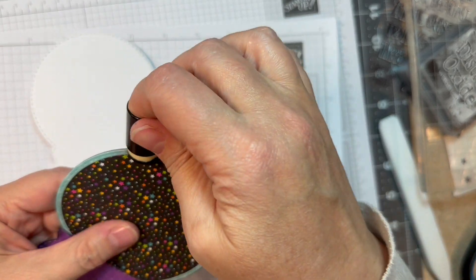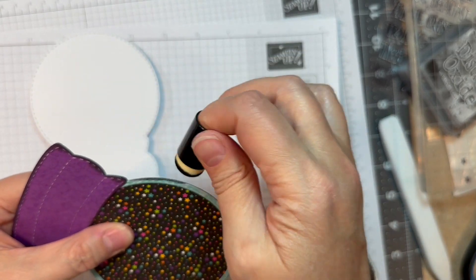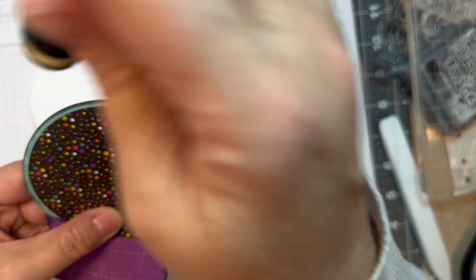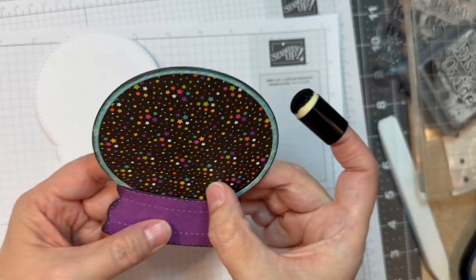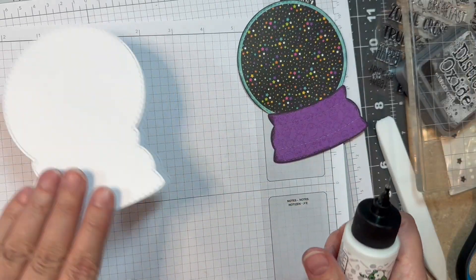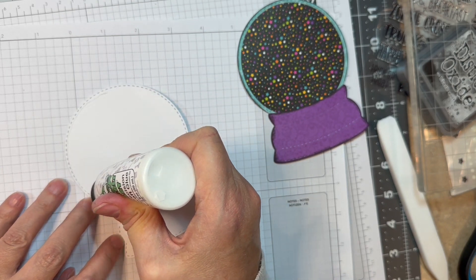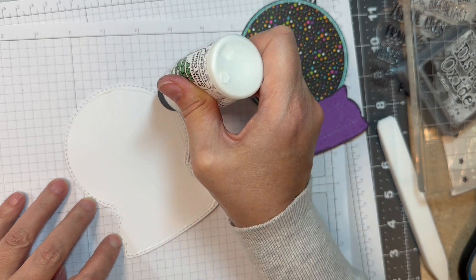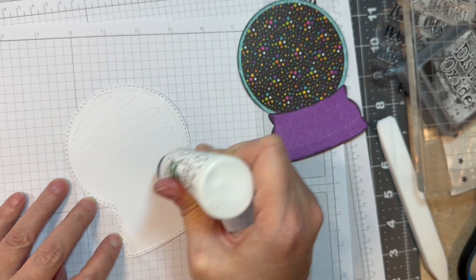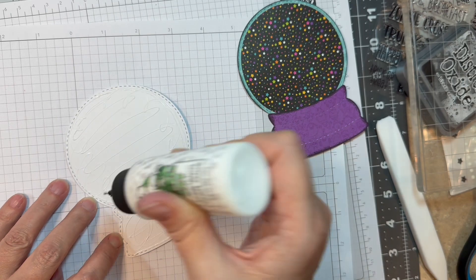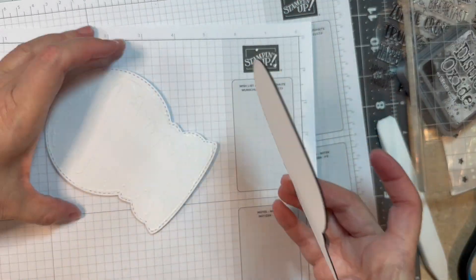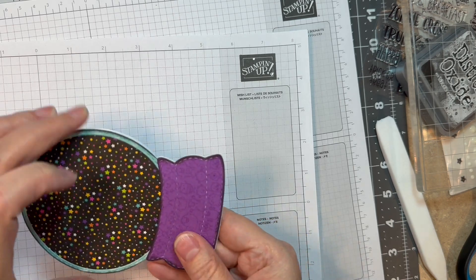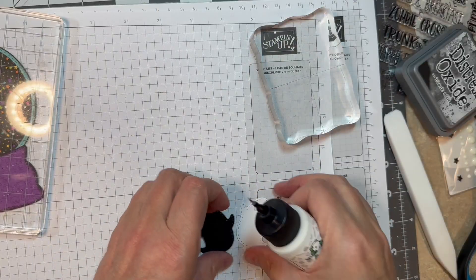Now I'm pulling out my Black Soot Distress Oxide Ink and I'm just going to ink around the edge of that little circle piece, so it goes with everything else I have going on. It helps with definition. Then I will stick down my little Snow Globe on my Snow Globe shape card. Really easy stuff, using Barely Art glue.